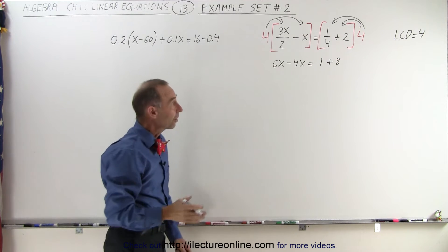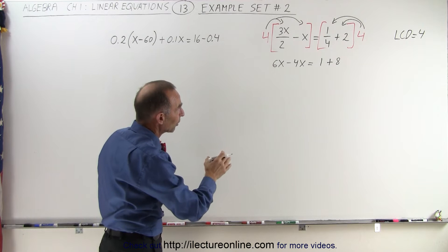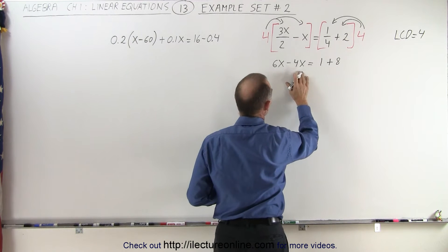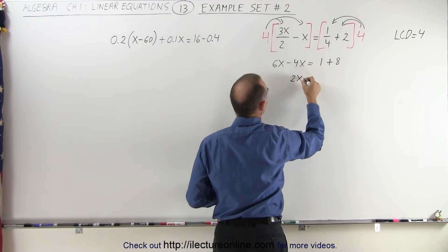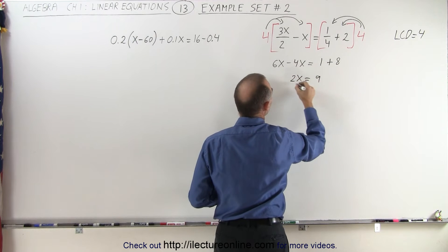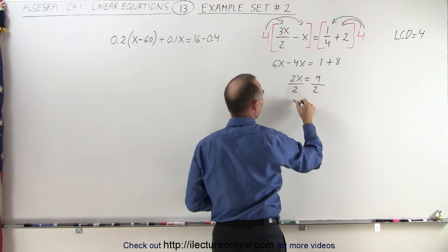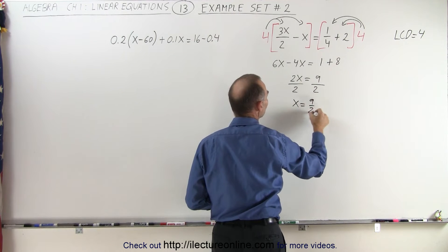Now you can see that on the left side we only have terms with the x, on the right side we only have numbers, so we can combine those two. 6x minus 4x is 2x, 1 plus 8 is 9, and now we divide both sides of the equation by the numerical coefficient. The twos cancel out, x is equal to 9 divided by 2.